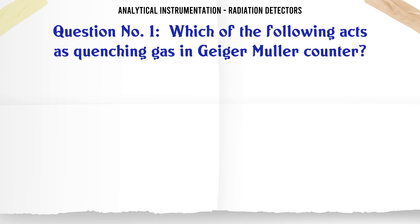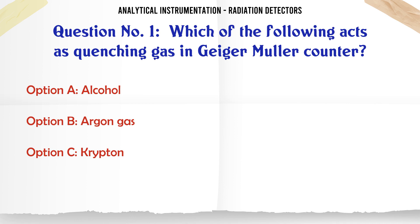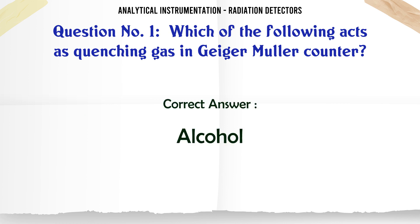Which of the following acts as quenching gas in Geiger-Müller Counter? A. Alcohol. B. Argon gas. C. Krypton. D. Hydrogen. The correct answer is Alcohol.